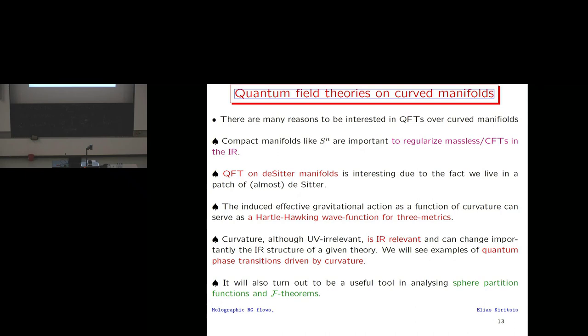Now let me come to quantum field theories on curved manifolds. There are several reasons to be interested: compact manifolds like spheres regularize massless theories and CFTs; QFT on de Sitter is relevant because we live in an approximately de Sitter patch; the induced effective gravitational action can serve as a Hartle-Hawking wave function for quantum cosmology; and most importantly, curvature, although UV irrelevant, is infrared relevant and can importantly change the infrared structure, generating quantum phase transitions driven by curvature. Curvature is also a useful tool for analyzing sphere partition functions and F-theorems.